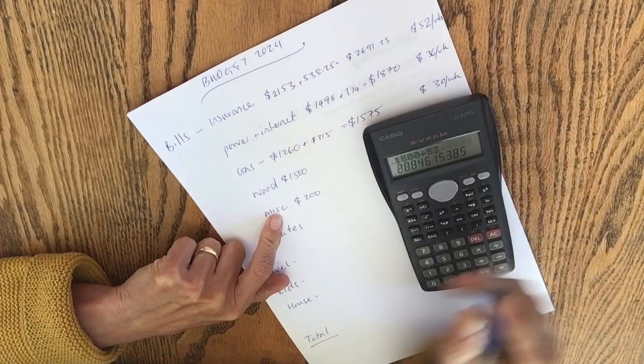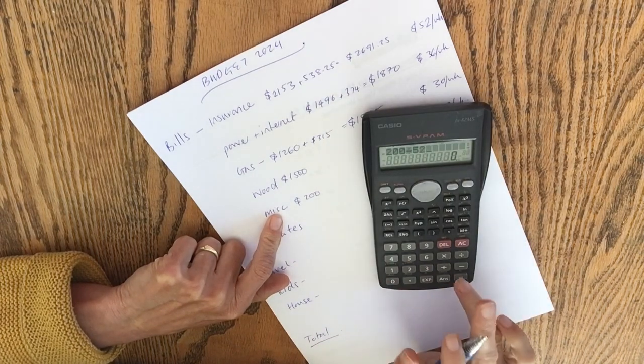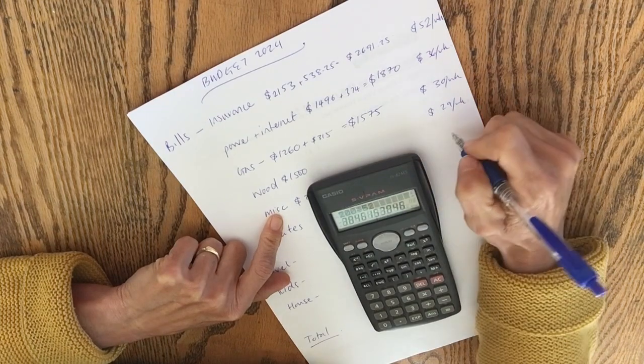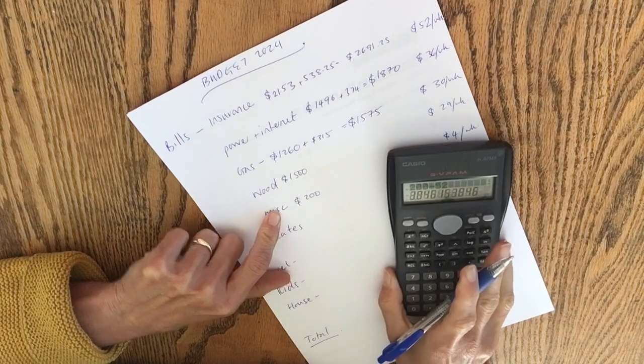Miscellaneous, I'm just going to chuck in $200. And I just can't think of what that would be for, but I don't know. I kind of have a feeling like there's something that maybe I'm going to forget.